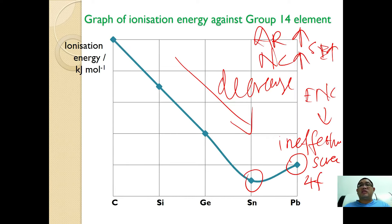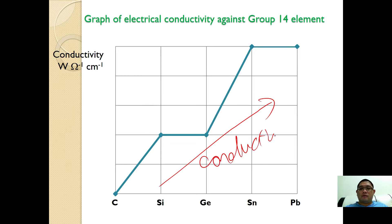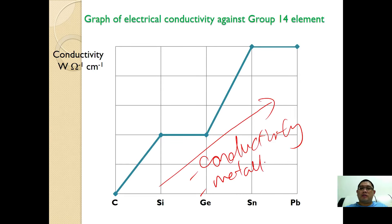That is how you are going to do your short notes when revising on your own. Finally, for the conductivity graph, going up the group the conductivity increases due to increasing metallic properties. Make sure that you use the graphs to help you with your revisions.